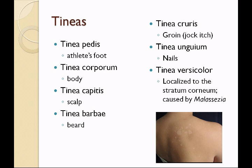There's also tinea versicolor, localized to the stratum corneum of the skin. It causes white splotches in light-skinned individuals, and lighter splotches in dark-skinned individuals. The fungus that causes this is known as Malassezia, formerly known as Pityrosporum. This fungus is communicable — if someone in your family has this, you can contract it, also from sharing towels or from tanning beds.